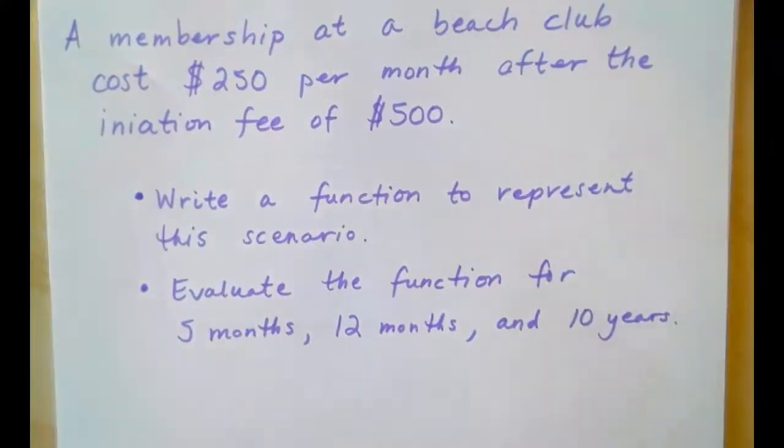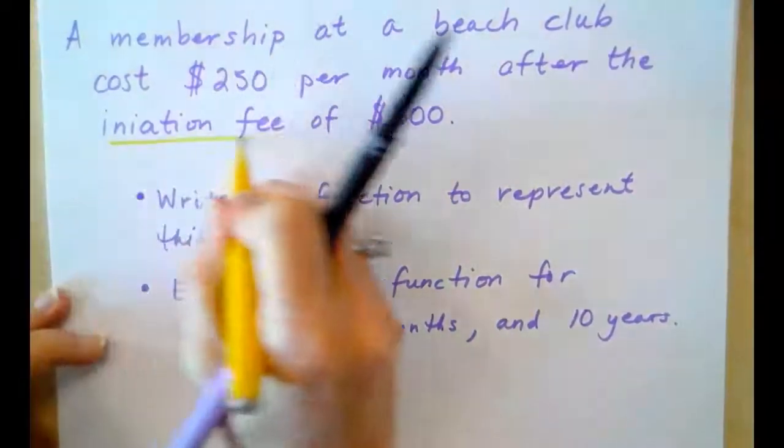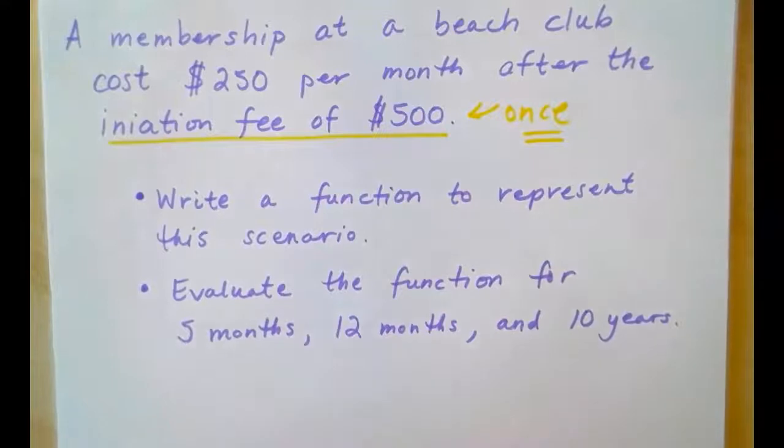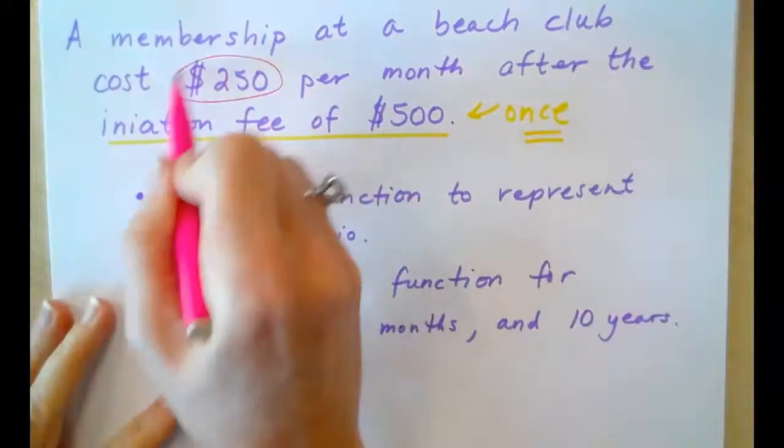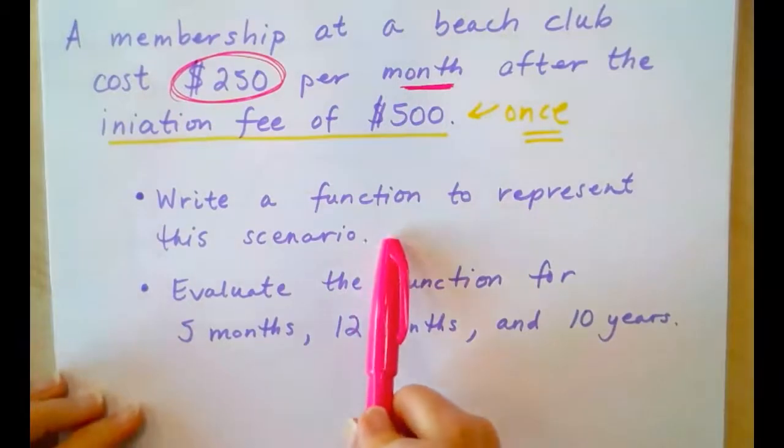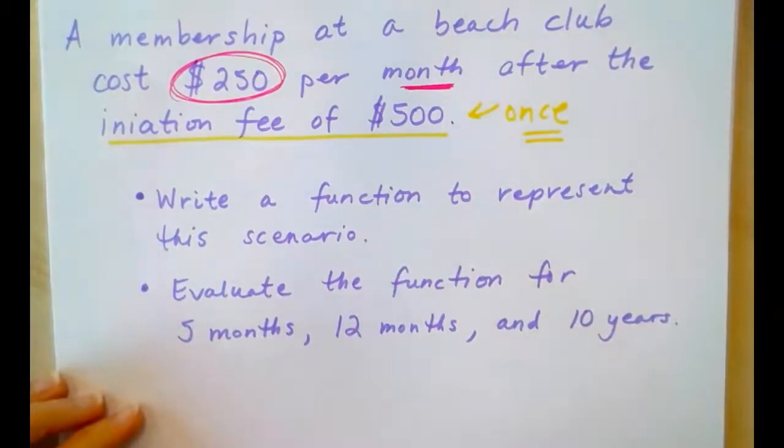So, consider the initiation fee. The initiation fee will only be paid one time. This is a once paid fee. And, once it's paid, you don't pay it anymore. But, what you do pay is every month you have to pay the membership. The membership fee is $250 per month. So, we're going to write a function to represent this scenario. And, then we will evaluate the function for 5 months, 12 months, and 10 years. And, we'll do a cost analysis.